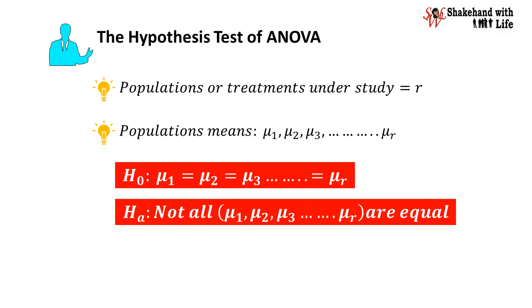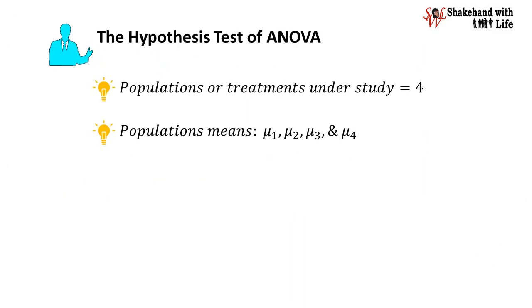Now we understand this situation in a better way. Suppose we have four populations or treatments under study, having population means mu1, mu2, mu3, and mu4.